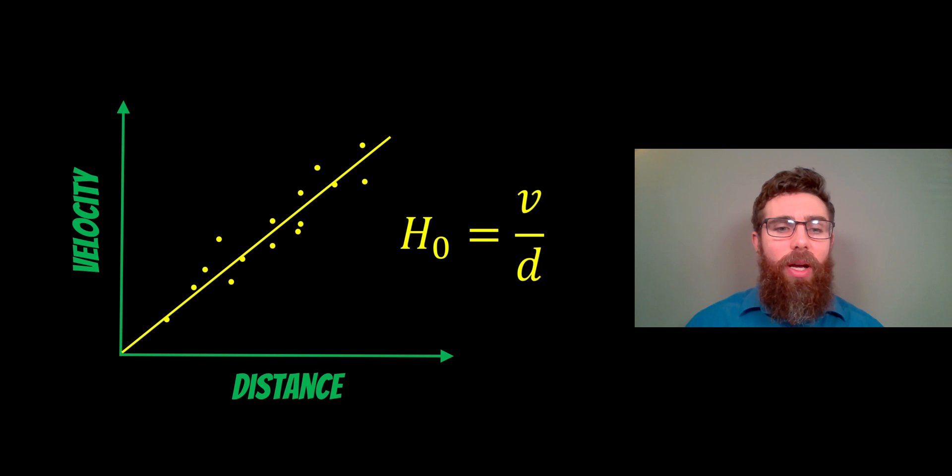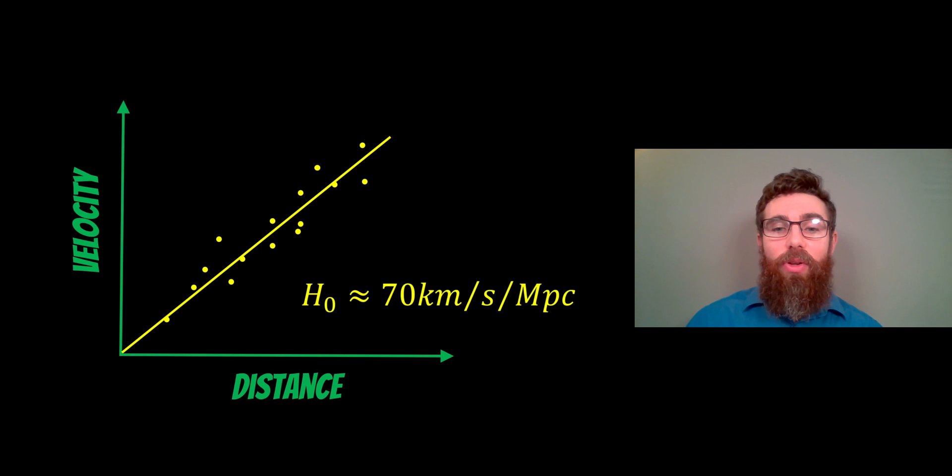We can actually draw a line of best fit through that, and the gradient of that line is our H₀, which is the Hubble constant. Because we are dividing the velocity by the distance, that then gives us our Hubble constant. When we do this with lots of galaxies, we end up with a Hubble constant of around about 70 kilometers per second per megaparsec.